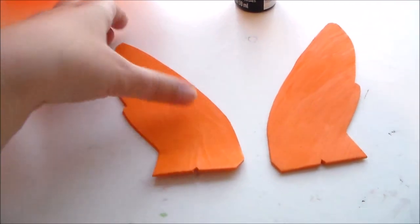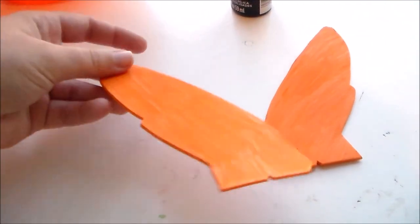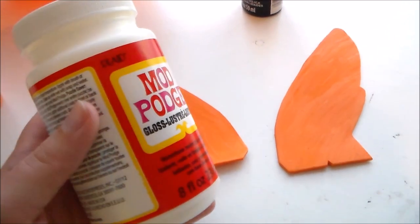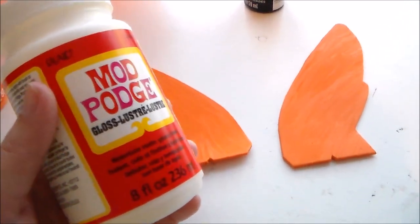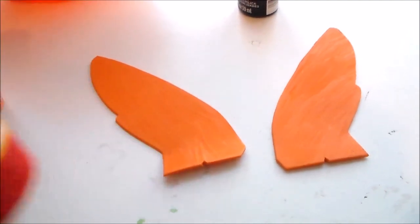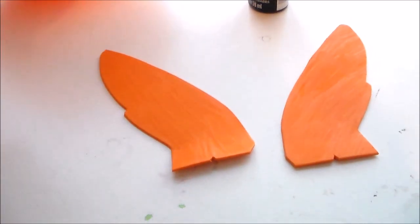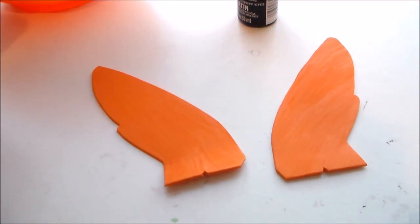Since they were already orange because of the craft foam, this step is optional, but I went ahead and painted them with some Mod Podge to seal them so that the paint won't soak in, and then painted them in Jack O'Lantern color so they would match the orange of the pumpkin a little bit more.